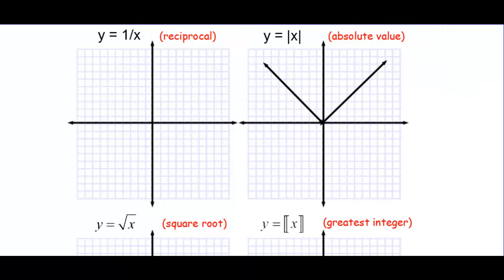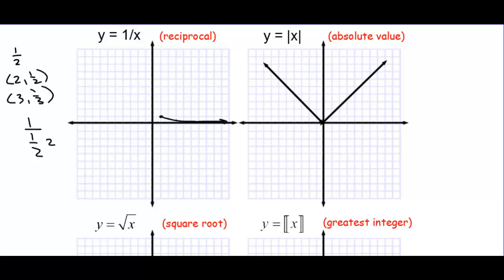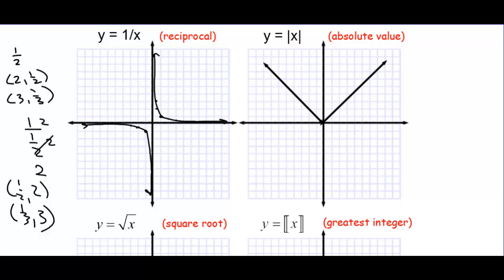We have y equals 1 over x, which is the reciprocal function. If we plug in 1, you get 1. Plug in 2, you get one half. Plug in 3, you get one third. If you plug in one half into 1 over x, you get 2. One third gives 3. So we get closer and closer to the y-axis but never touch. On the negative side, negative 1 gives negative 1, negative 2 gives negative one half, negative 3 gives negative one third. So we'll approach the x-axis forever and never touch, and approach the y-axis but never touch.